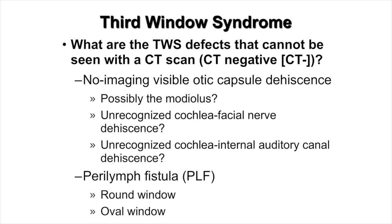Third window syndrome defects that cannot be seen on CT scan may include the modiolus where the cochlear nerve leaves the inner ear, unrecognized cochlea facial nerve dehiscence — as was the case with this child — unrecognized cochlear internal auditory canal dehiscence, and perilymph fistula at the round or oval window, which is much more difficult to diagnose.